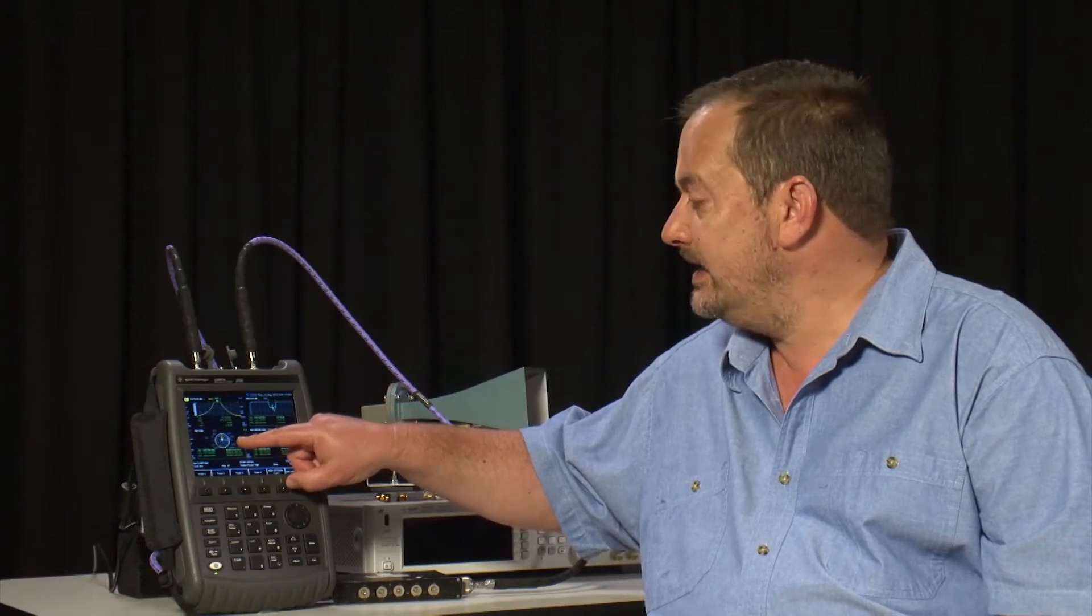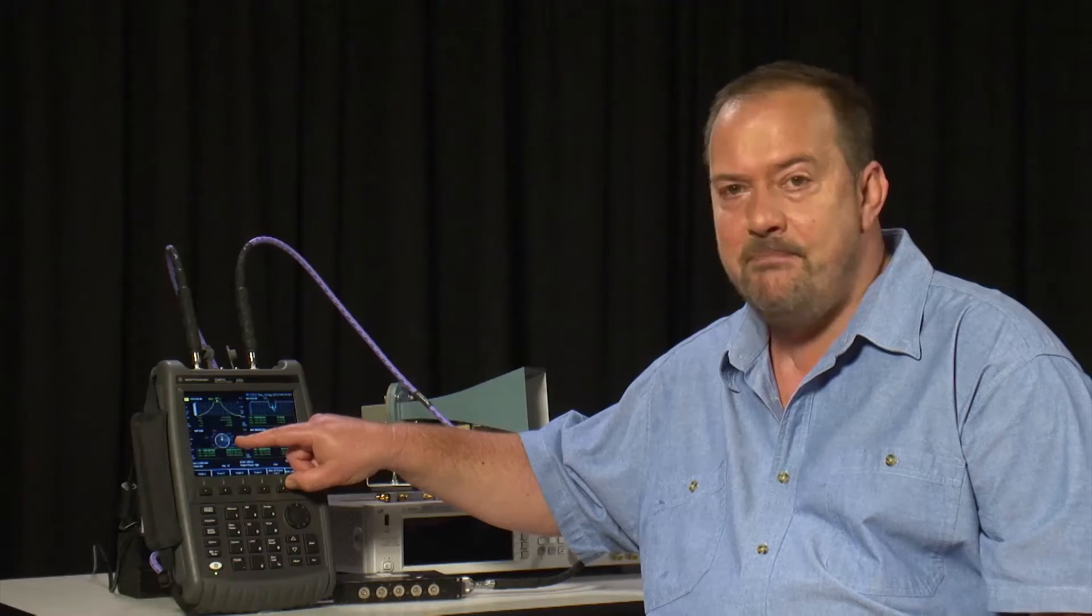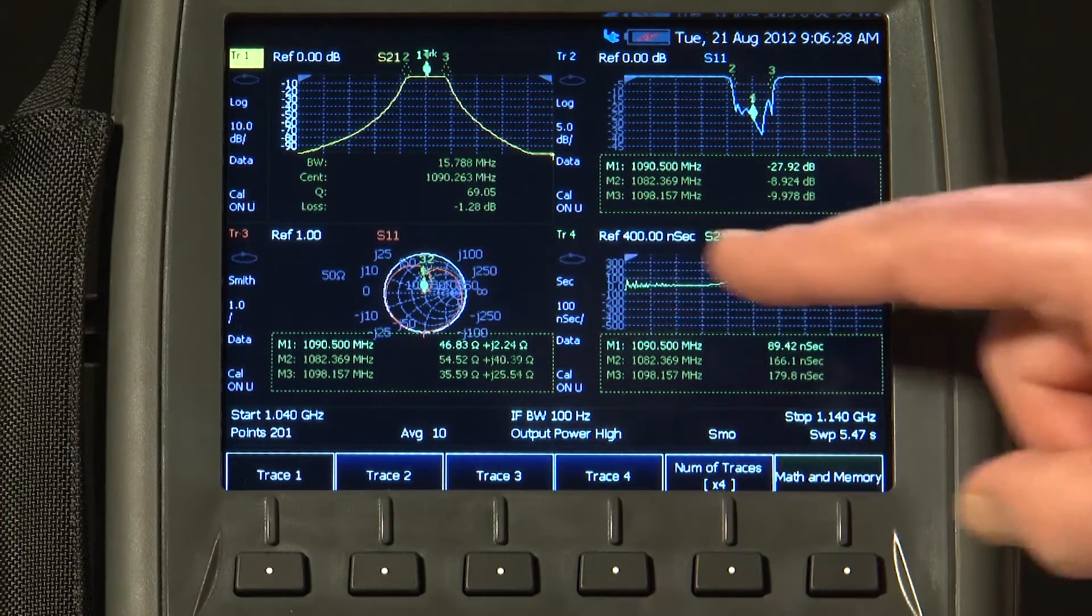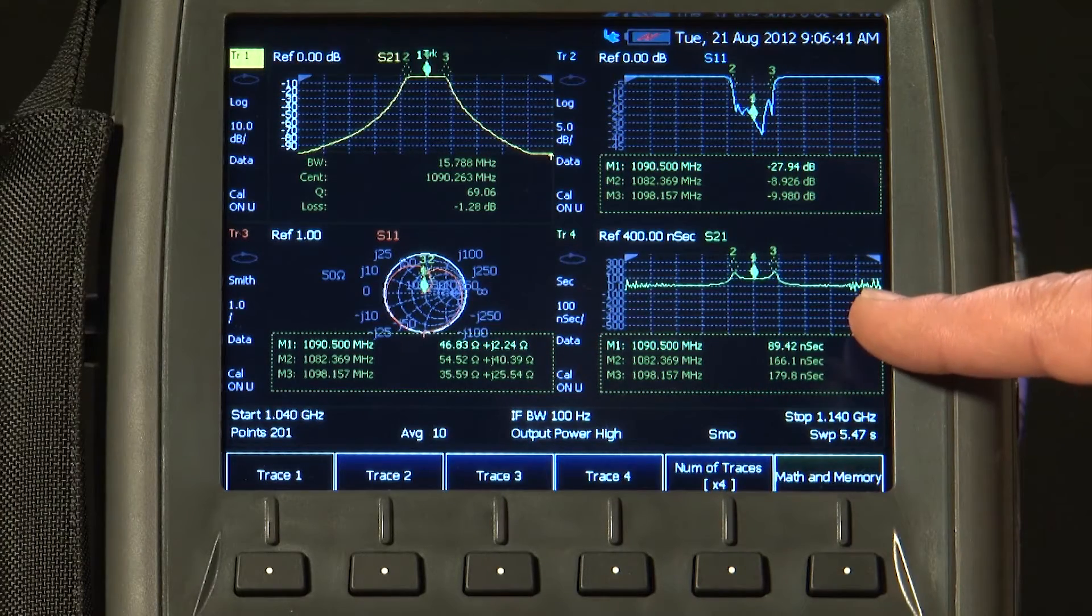On Trace 3, I am displaying a Smith Chart, so we can measure the impedance of the filter at the range of frequencies that we are sweeping. And in Trace 4, I am currently measuring Group Delay.